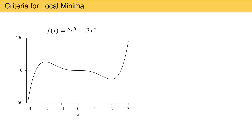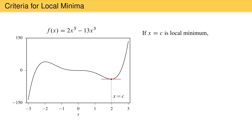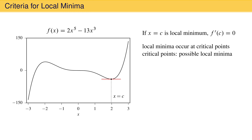Similar criteria exist for a local minimum, and we can use the same function to illustrate them. We have said that a local minimum exists near x equal positive 2. We can call this point c. At this point, the straight line tangent to the curve is horizontal, indicating that the first derivative is zero. If point c is a local minimum, the first derivative at c will always be zero. Local minima occur at critical points, but not all critical points are local minima — critical points are possible or candidate local minima that must be tested. For a critical point to be a local minimum, the function must be decreasing before the critical point, giving a first derivative that is negative, and the derivative must be increasing to allow the function to reach the local minimum, requiring a second derivative that is positive.